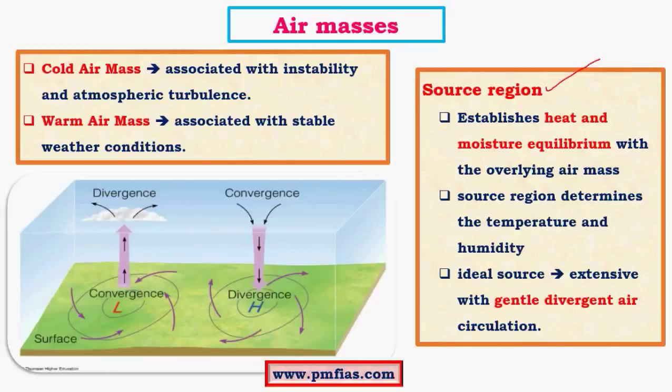The source region determines the temperature as well as humidity. For example, airmasses which are formed on continents have lesser amount of moisture, whereas those forming above oceans have greater amount of moisture. An ideal source region is a region which has gentle divergent air circulation, and divergence is associated with high pressure regions at the surface of the earth. In my previous video, while discussing pressure belts and permanent winds, I explained about subtropical high pressure belts and polar high pressure belts.